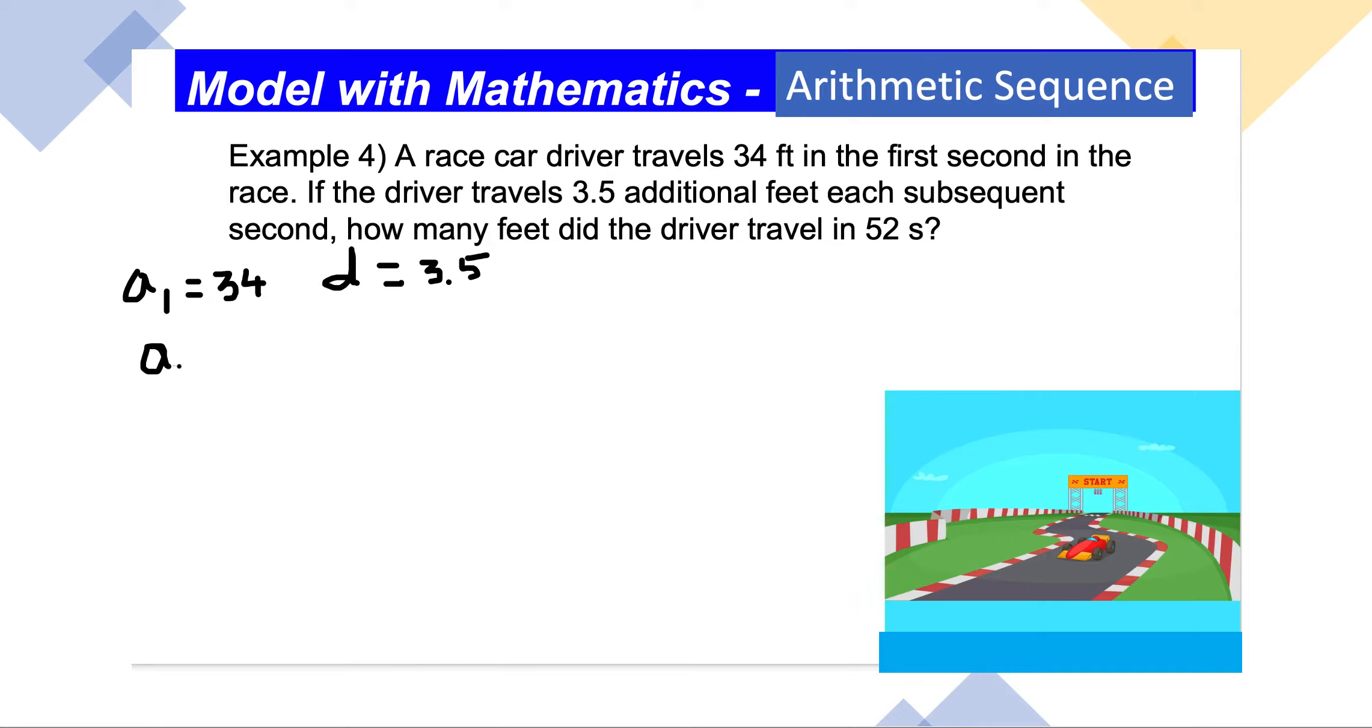The explicit definition or explicit formula for an arithmetic sequence is: aₙ = a₁ + (n - 1)d.